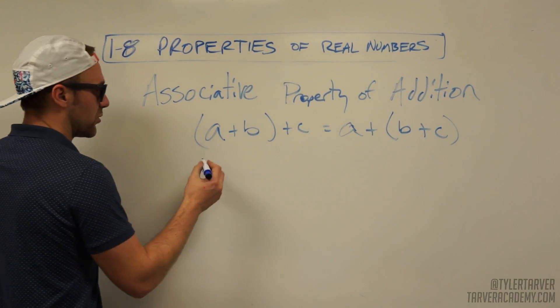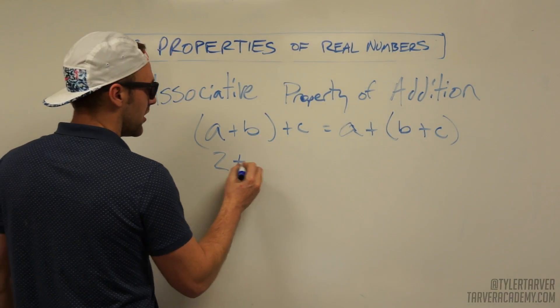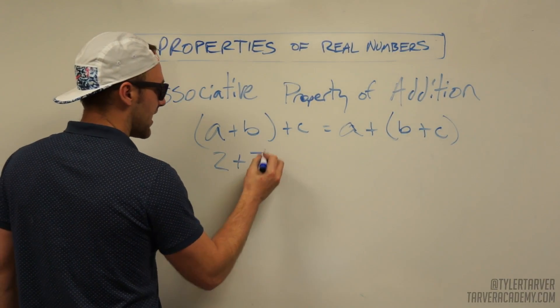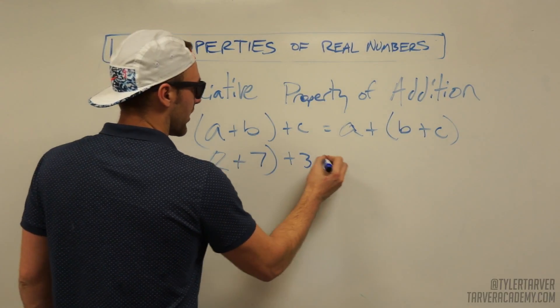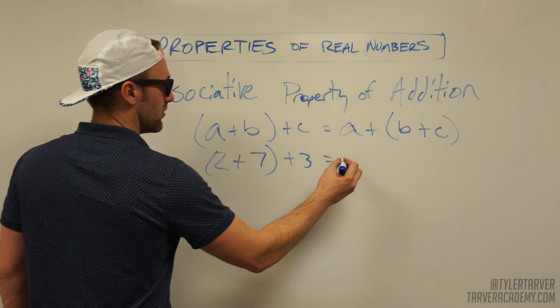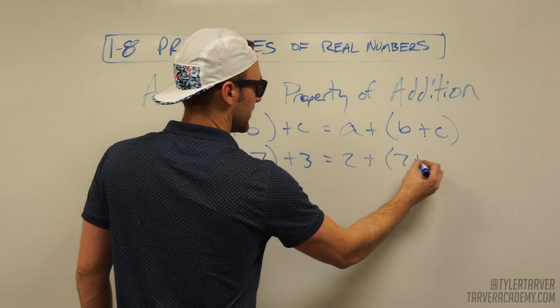So let's use actual numbers. Let's say a is two, b is seven, and c is three. So two plus seven plus three.